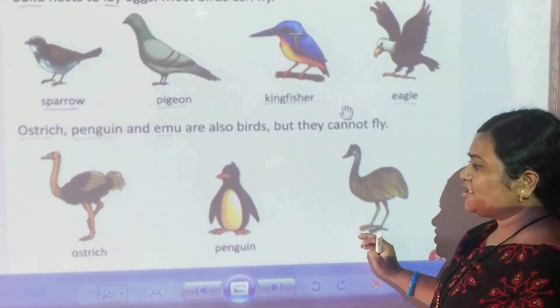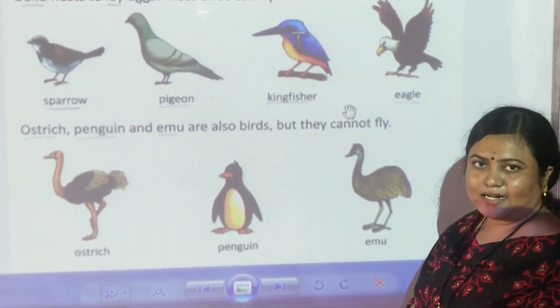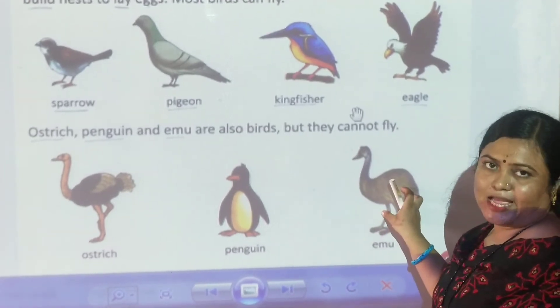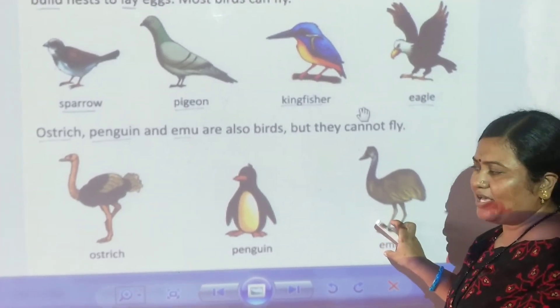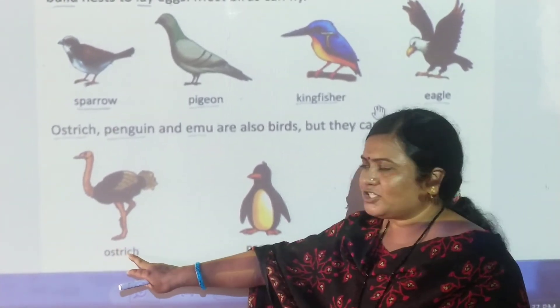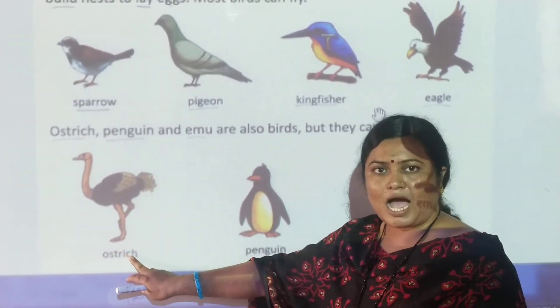Emu is a bird found mainly in Australia. Ostrich means shahamroon.